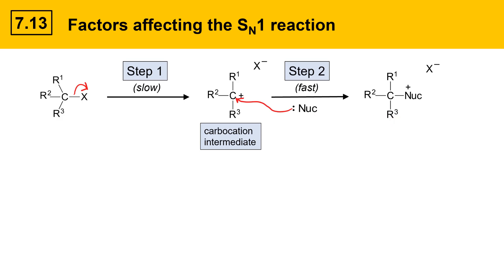The two steps of the SN1 mechanism have different rates. The first step is the slow step, and the second step is the fast step. Anything that affects the rate of the first step, the slow step, will impact the rate of the overall reaction, while anything that impacts the second step, the fast step, won't affect the overall rate.